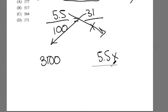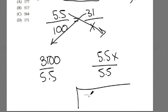I could get here 3,100, 3,100, and here 5.5x. Then what do I do? Well, I could divide by 5.5, divide by 5.5, and then I got this kind of awkward division problem, of 3,100 divided by 5.5.